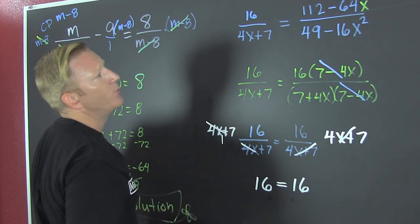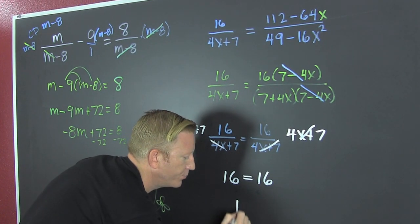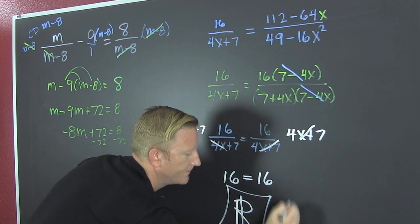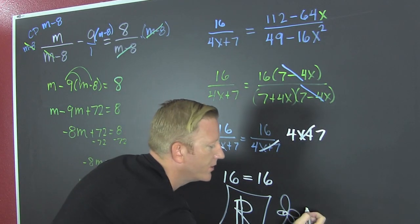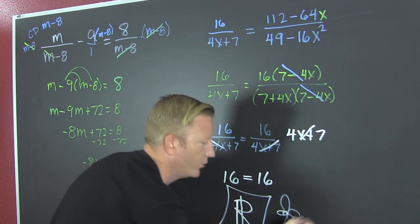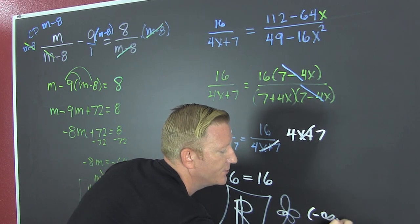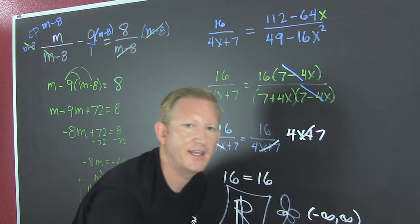Or, since there's only one x, we'll say all reals. That's a fancy way to say all reals. You could also say infinite solutions or like minus infinity to infinity, because that's like everything.